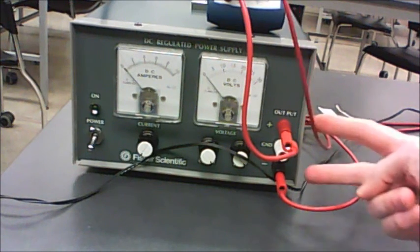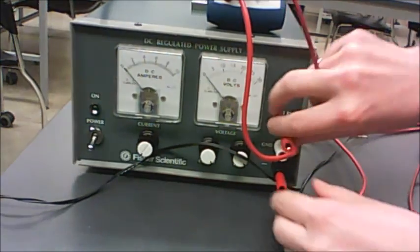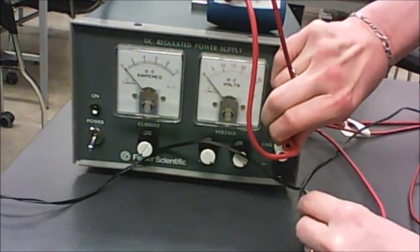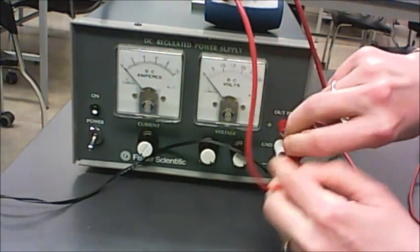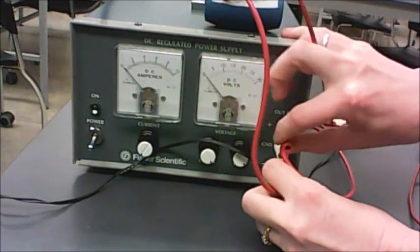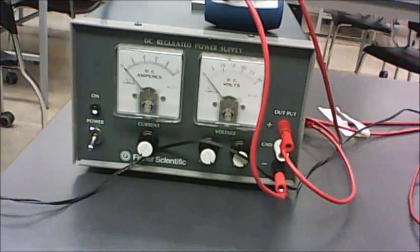To reverse the current direction, all you need to do is swap these two wires on the power supply. So just pull them both out and move them to the opposite locations. And that will reverse your current direction through the apparatus.